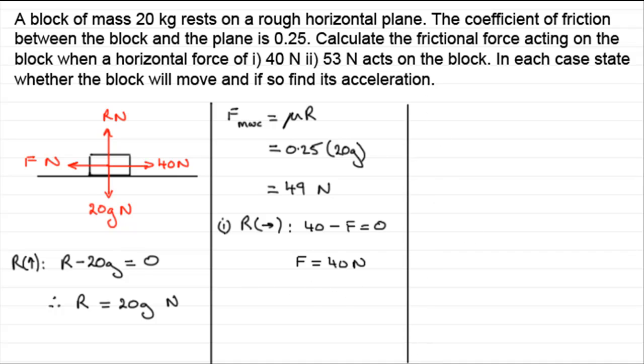Now in case 2, I'm sure you most probably can guess that it is going to move. Because we're applying this time a force of 53 newtons to the block in a forward direction. So if we draw our block in here, we've got our forward force here of 53 newtons. We've got the weight acting downwards, 20 g newtons, and we've got a reaction r newtons. Now, this frictional force here, that we know the maximum that it can be, is 49 newtons, and we're pushing with much more than 49 newtons. So this must be the maximum value of friction.